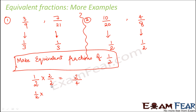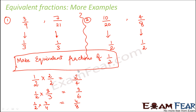Instead of multiplying the numerator and denominator by 2, if you multiply them by 3, you get 3 by 6. So 3 by 6 is also an equivalent fraction of 1 by 2. And if you multiply by 4, you get 4 by 8. So 2 by 4, 3 by 6, 4 by 8, and so on are all equivalent fractions of 1 by 2. This is how we make equivalent fractions of a given fraction — by multiplying the numerator and the denominator by the same whole number.